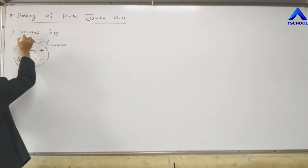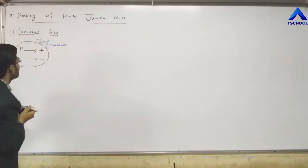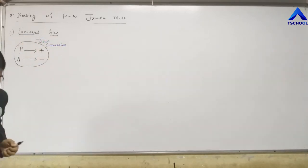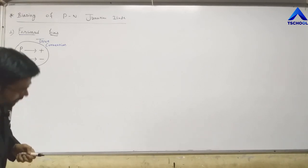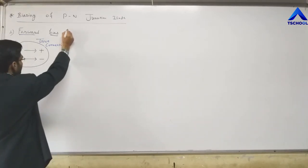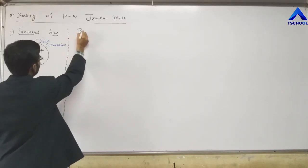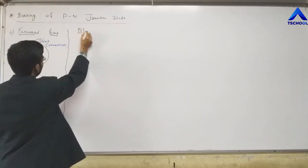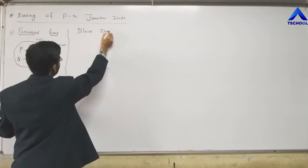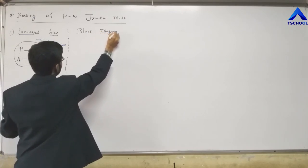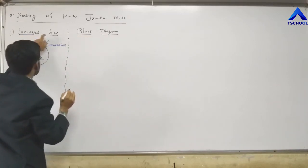That connection — P with positive and N with negative — is called a true connection, which means forward bias. Now we will observe the block diagram of forward biasing.